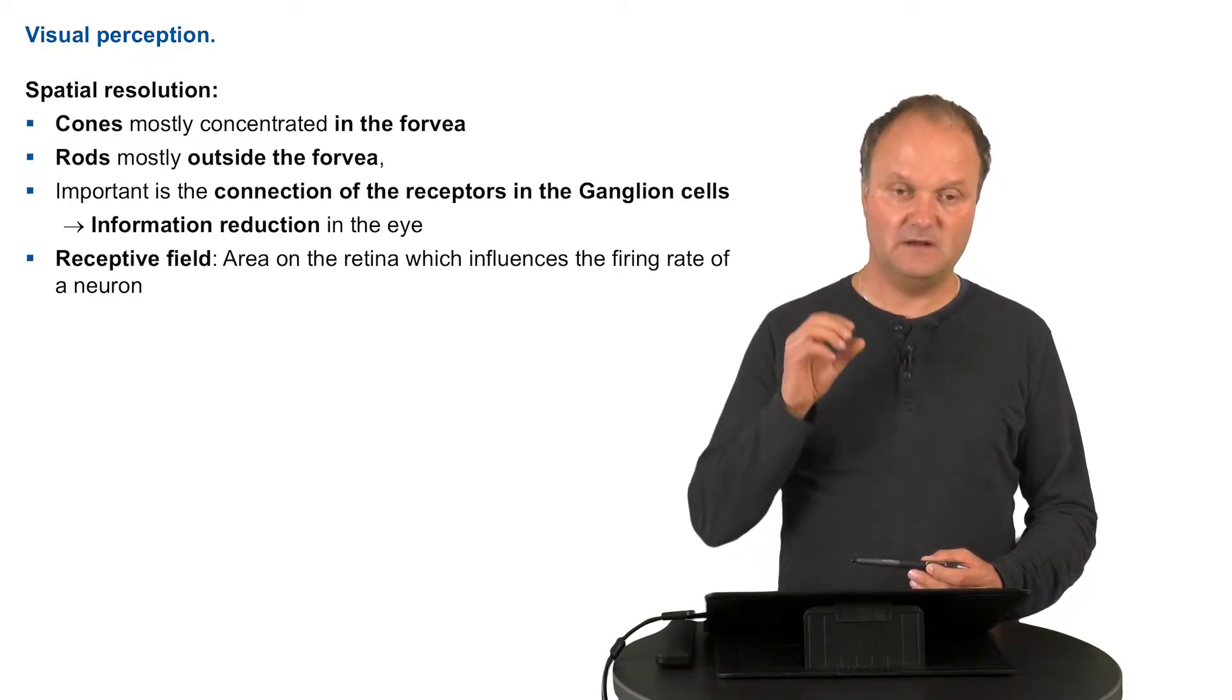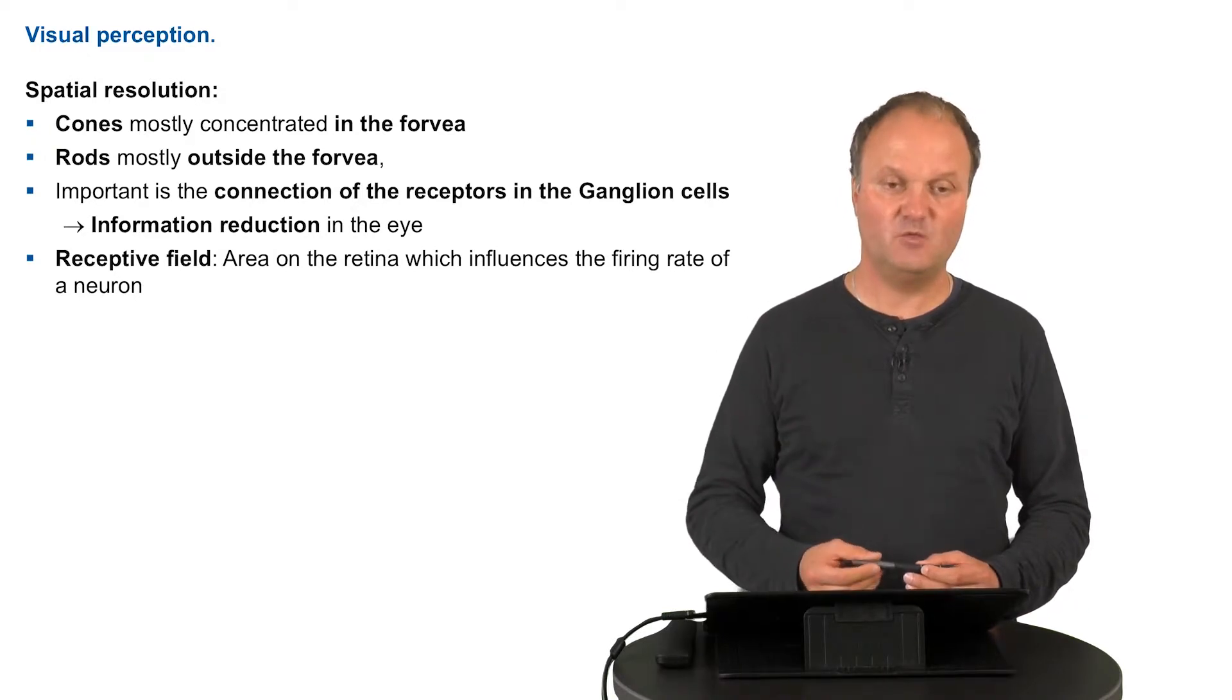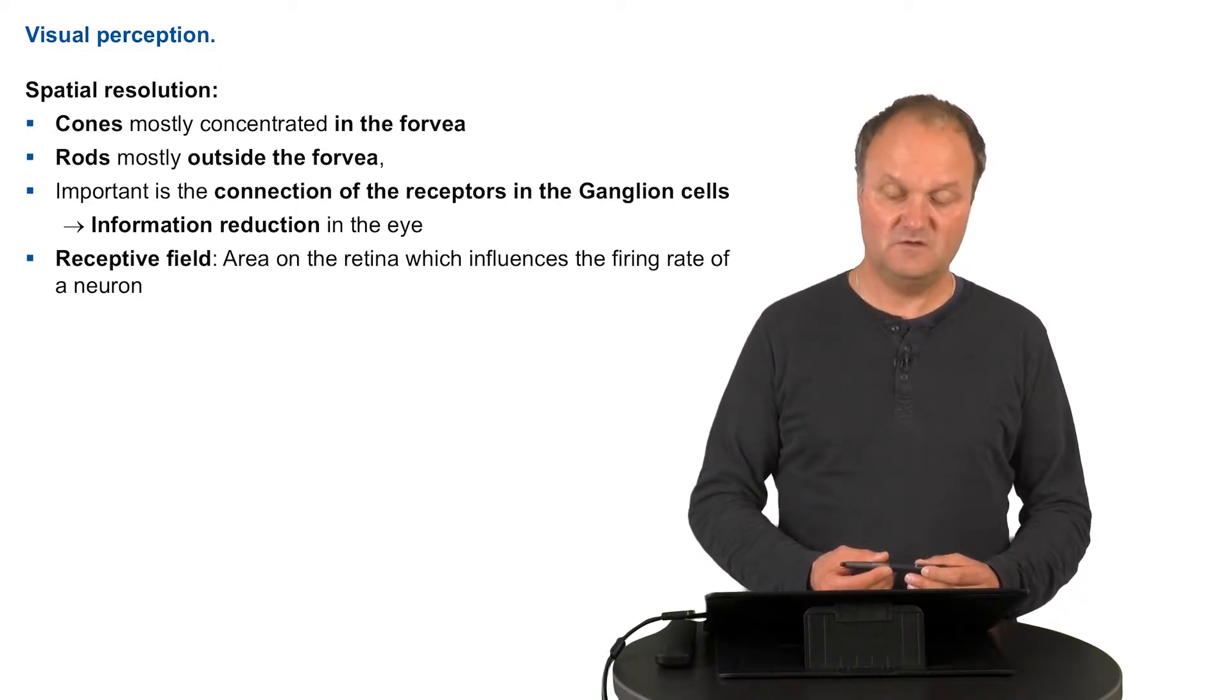The geographical area of rods and cones which is connected to one ganglion cell is called a receptive field. And this receptive field is a little bit smaller for cones than it is for rods, which also leads to a higher visual accuracy for the cones than for the rods.